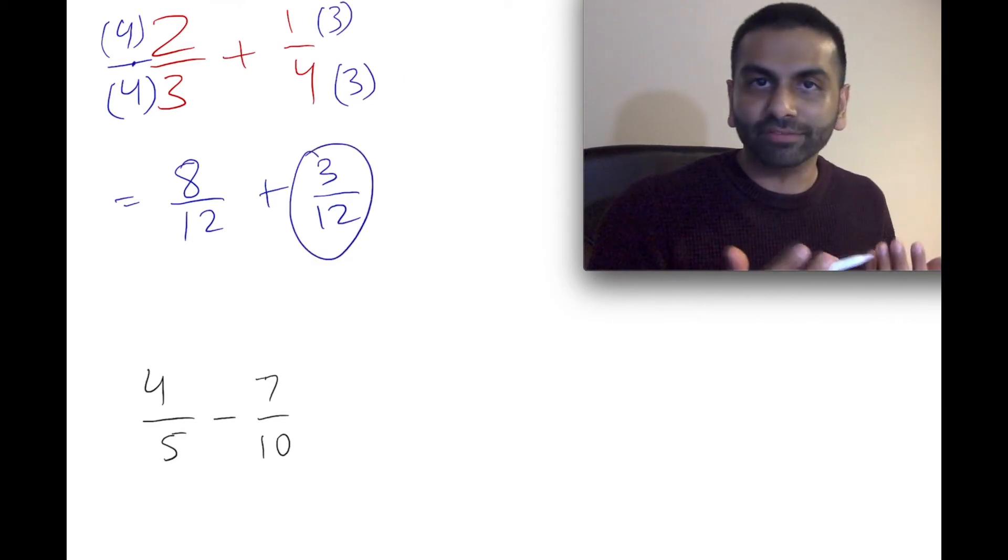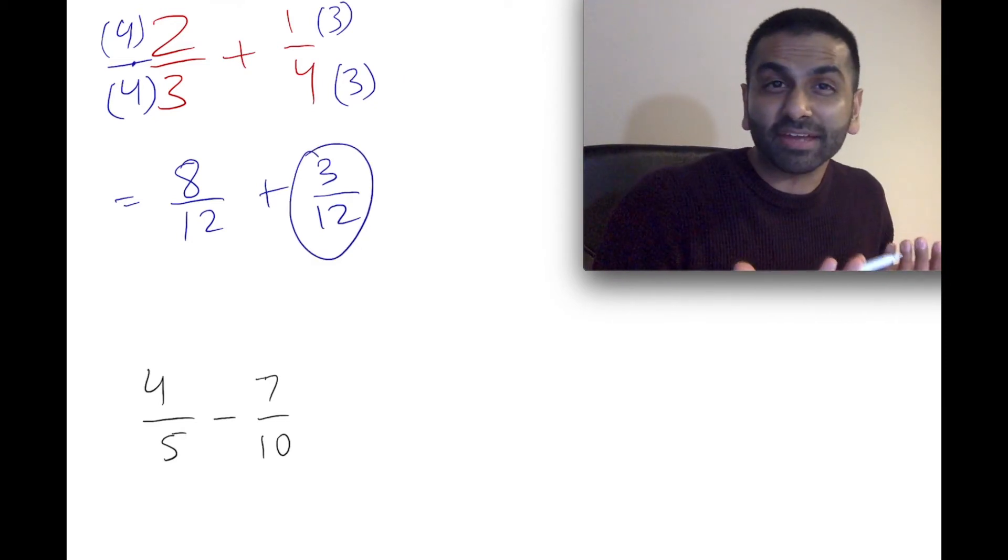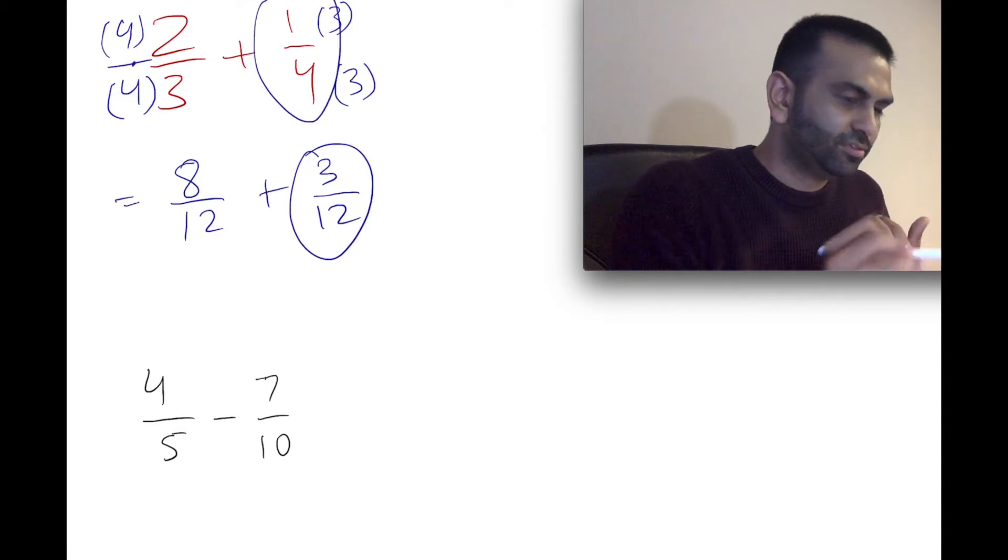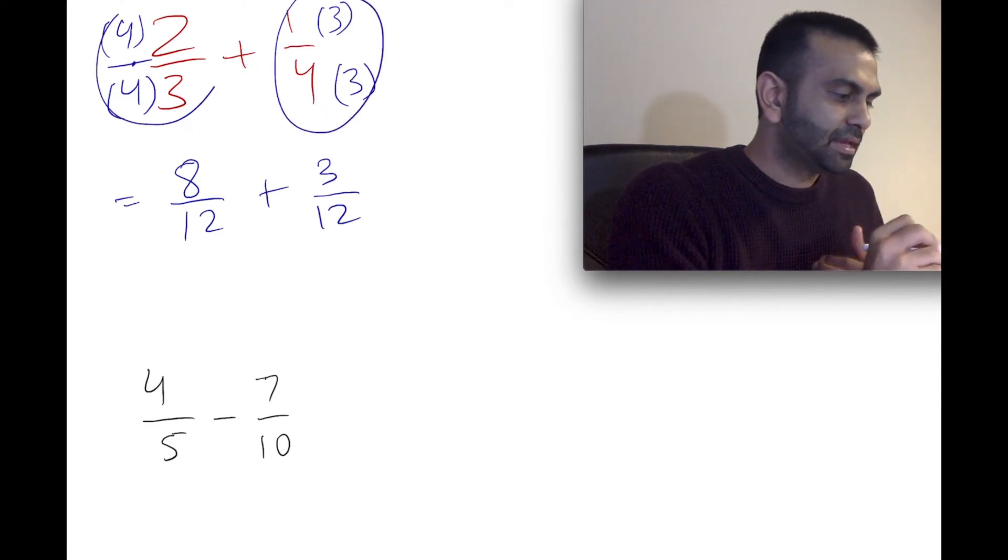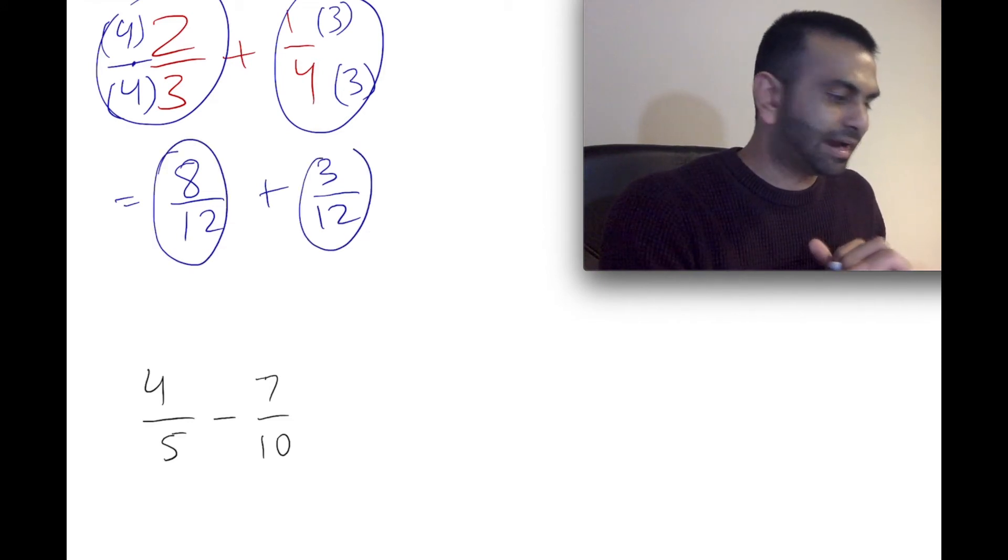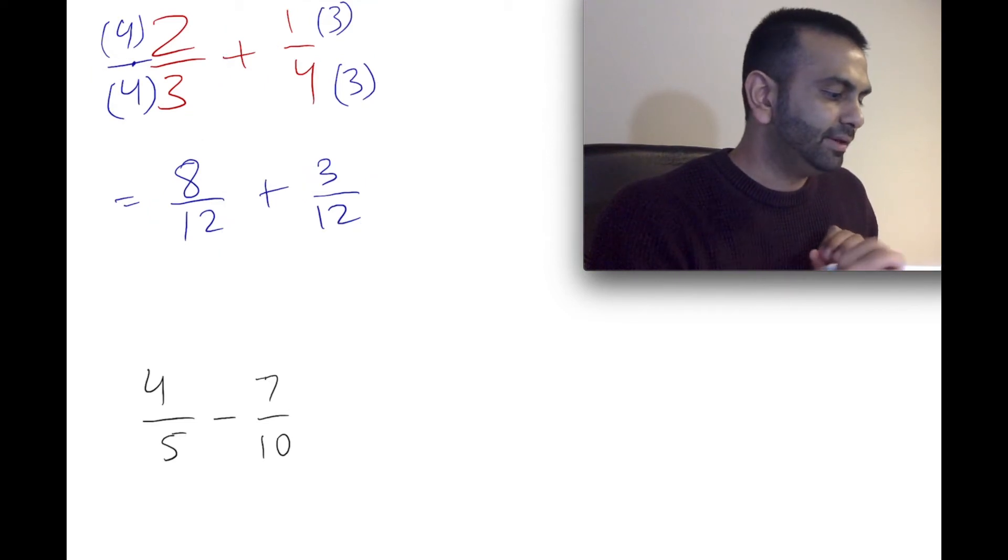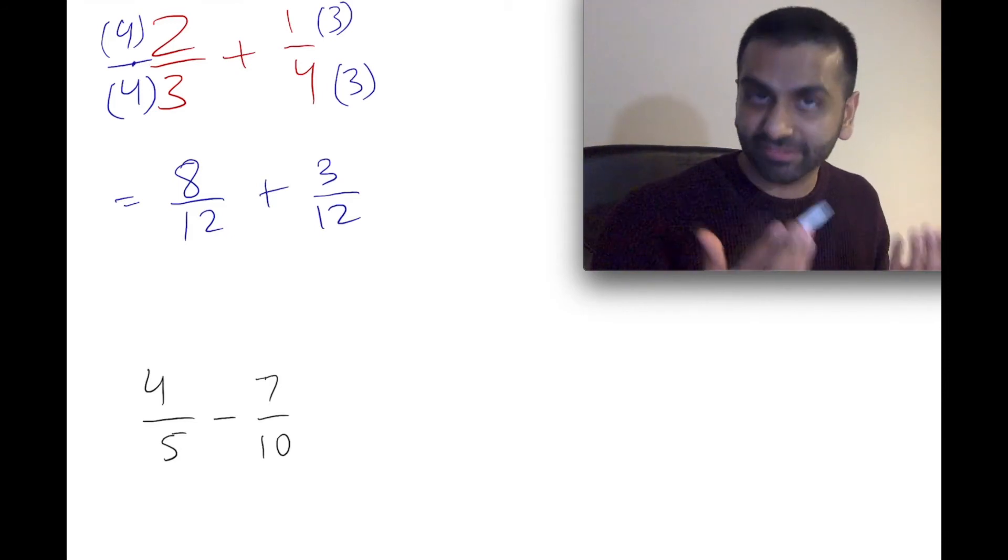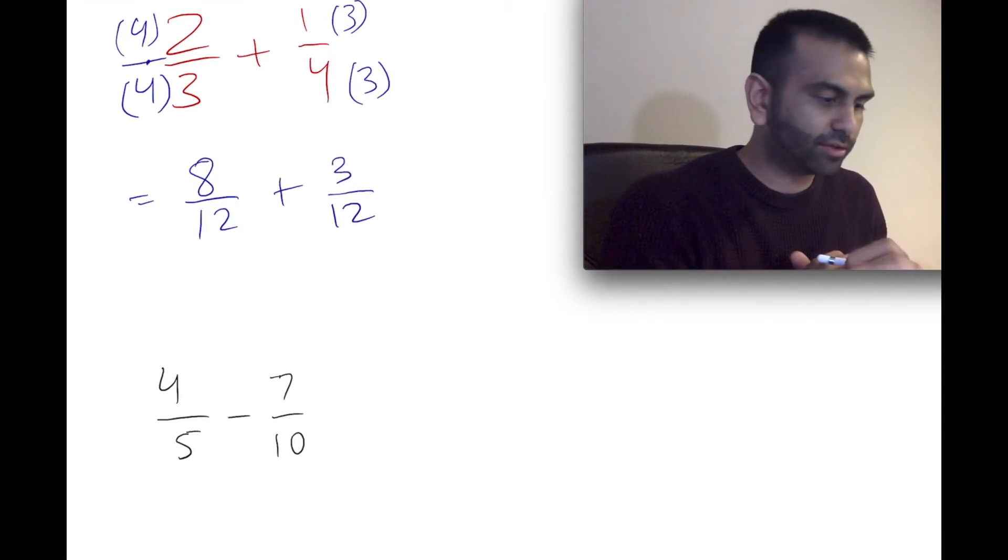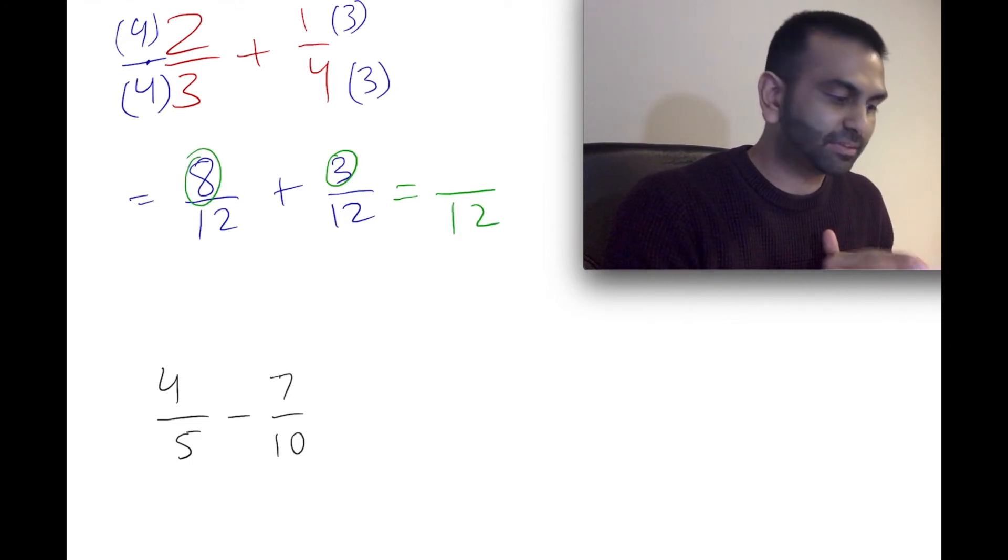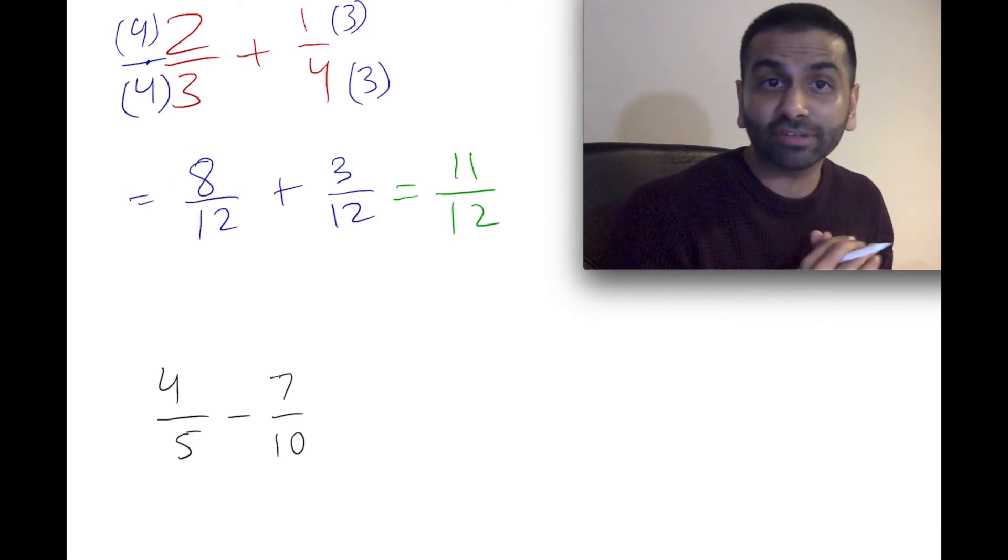So really, all we've done by multiplying the top and the bottom by something is really we're just changing how these two numbers look, but we're not changing their values. And so, long story short, here, this is now a problem that's much easier to solve because the denominators are the same. So that means we get 12 as the denominator, because you keep it the same, you don't add them. And you do add the numerator, so 8 plus 3 is 11. So that's our final answer.